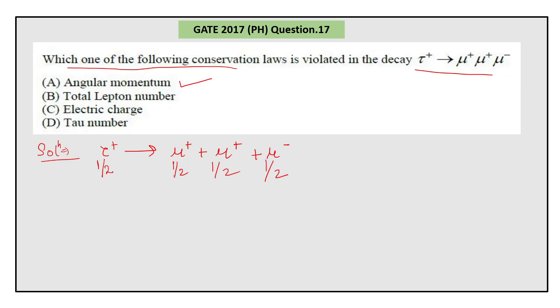If you see, these two spins couple to give zero as a final value. Suppose they are anti-parallel, so they will give zero. We are left with only the spin of this muon negative, so that means spin on the left-hand side equals spin on the right-hand side. Therefore, angular momentum is not the quantity that is violated.